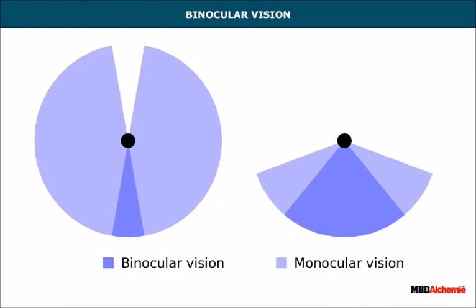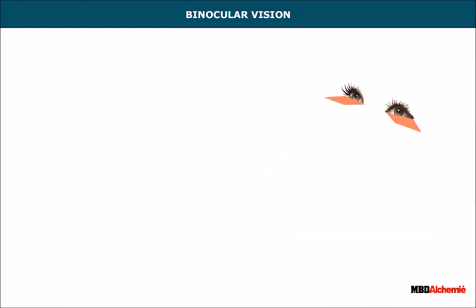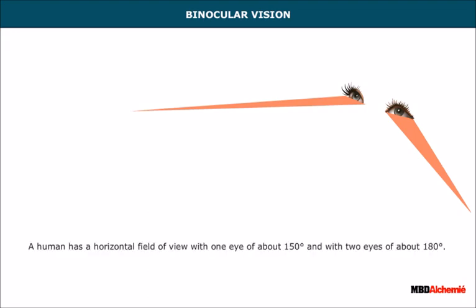Binocular vision is a vision in which both eyes are used together. It gives a wider field of view. For example, a human has a horizontal field of view with one eye of about 150 degrees and with two eyes of about 180 degrees.